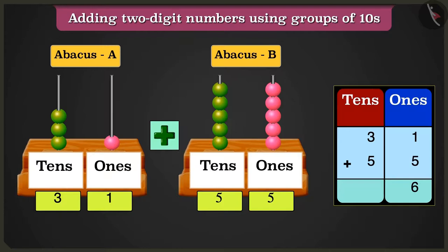Now in the box of tens, adding 3 tens and 5 tens, count after 3: 4, 5, 6, 7, and 8 tens is what we get. So here we have 8 tens and 6 ones.